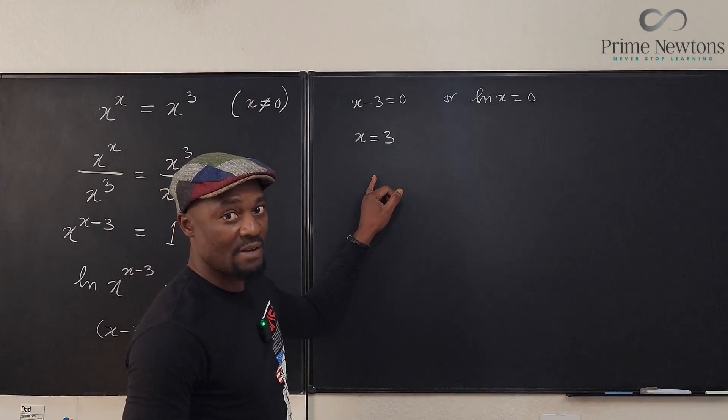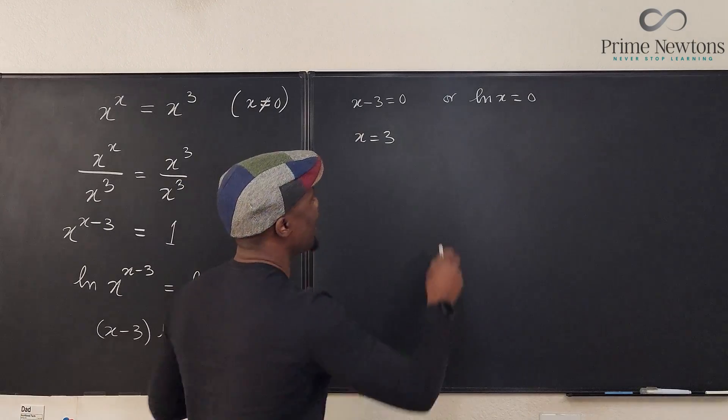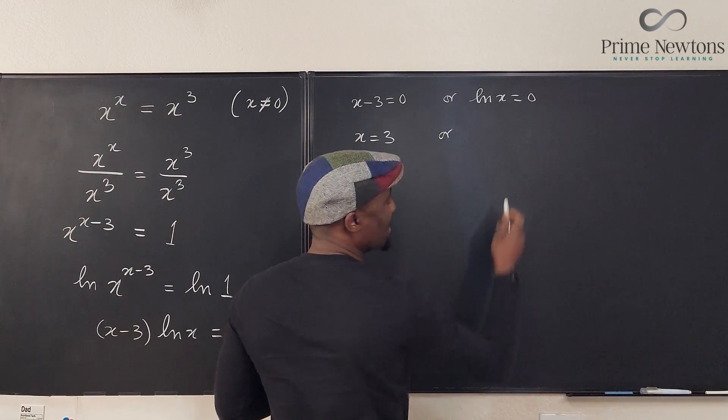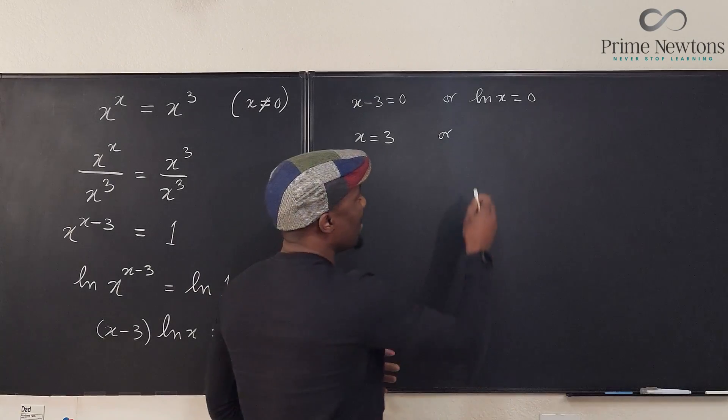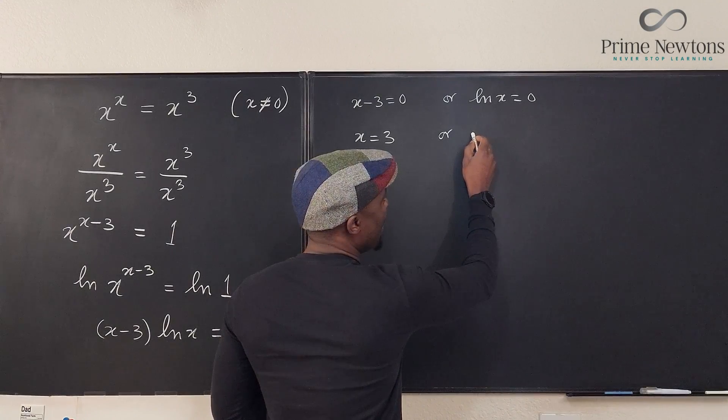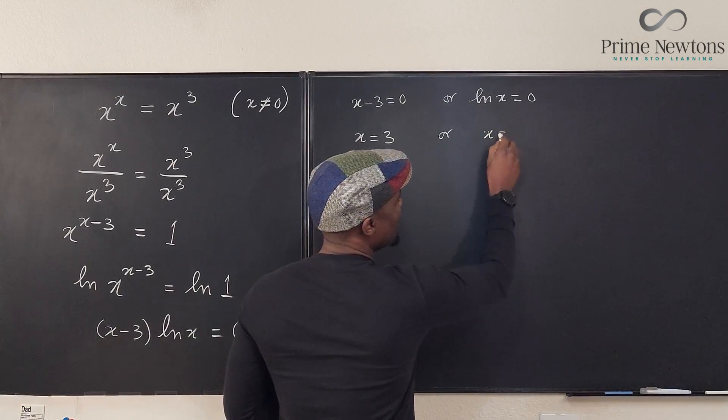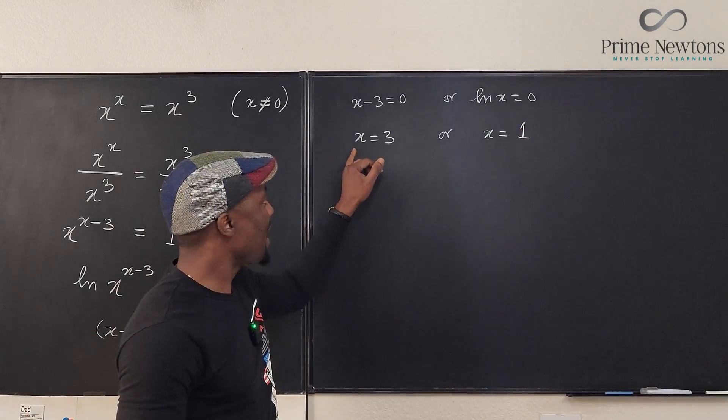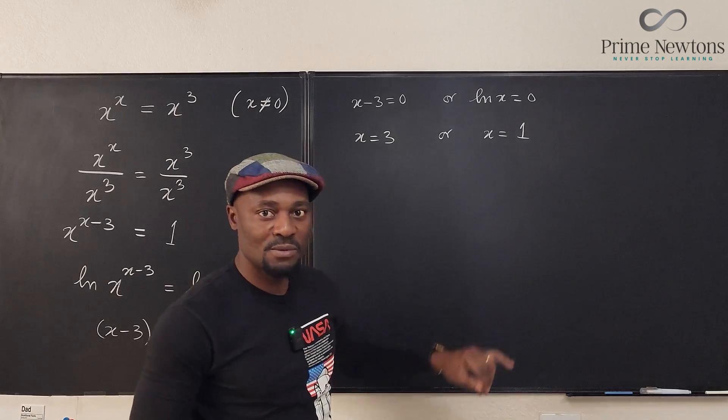We're going to go check all the answers and see if they're correct. If ln of x equals zero, if you take the e of both sides, what do you have? x must be equal to 1. Clearly x equals 1. So we have two answers: x equals 3 or x equals 1.